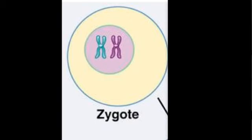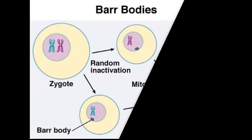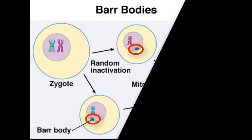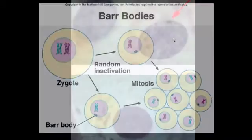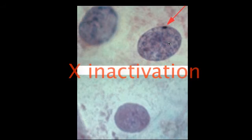Now what is a female going to do with two X chromosomes? Does she make twice the number of proteins encoded on the X chromosome? The answer is no. In fact, each time a female cell goes through mitosis, one of the X chromosomes gets packaged up and becomes inactive. All of its genes are turned off. It can be seen in the nucleus tucked up against the inside of the nuclear membrane, and it's called a Barr body. The process is called X-inactivation.